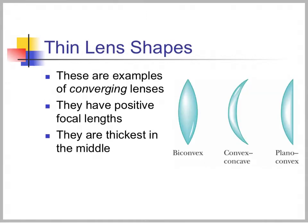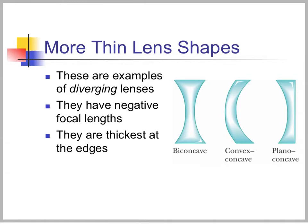There are many different shapes for thin lenses. Examples of converging lenses include biconvex — convex on both sides — convex-concave, where the radius on one side is larger than the other, and planoconvex — one side is flat. Light going through all of these will converge. Diverging lenses all have negative focal lengths and are thickest at the edges. Examples include biconcave, convex-concave where the smaller radius of curvature means thicker edges, and planoconcave — a flat surface and a concave surface.